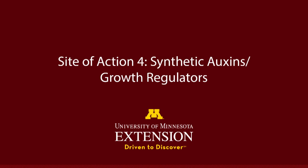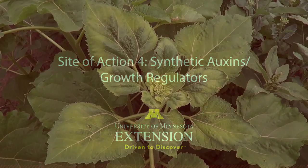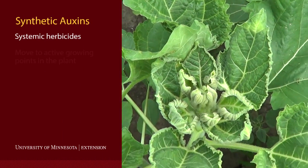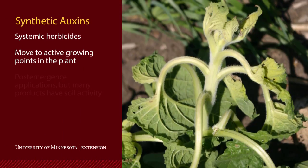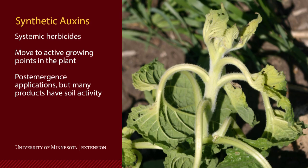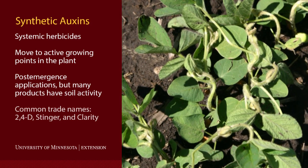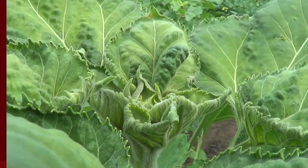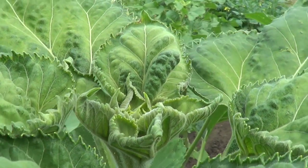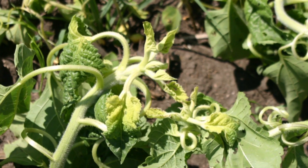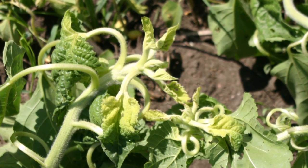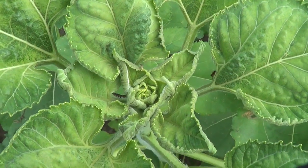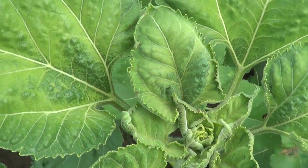Site of action number four herbicides contain three chemical families and influence plant hormones and are known as growth regulators. Site of action four herbicides are synthetic auxins, a plant hormone that influences and binds to receptors that cause unregulated growth and development of the plants. They are characterized by bending and twisting of plant parts, unregulated growth, callus tissue, etc.